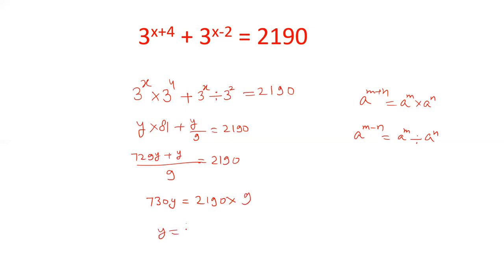This is 730y equals 2190 into 9. So y can be written as 2190 into 9 upon 730. This will be cancelled out. So y equals 27 and we had considered y as 3 power x.